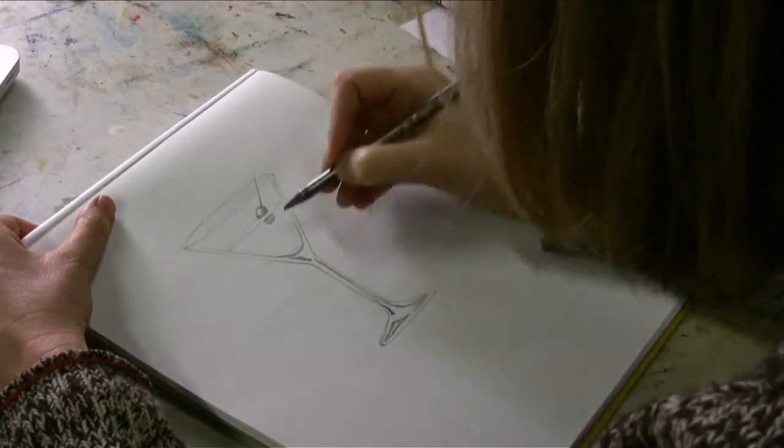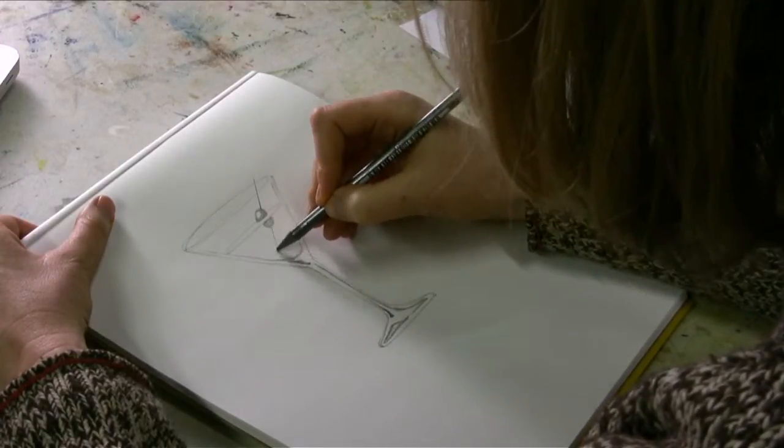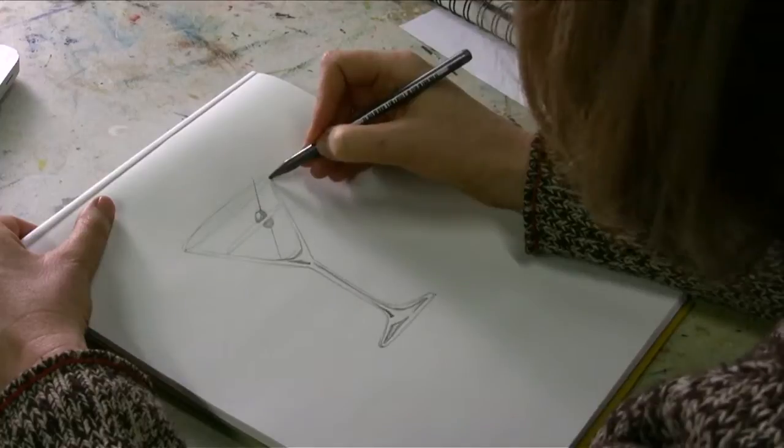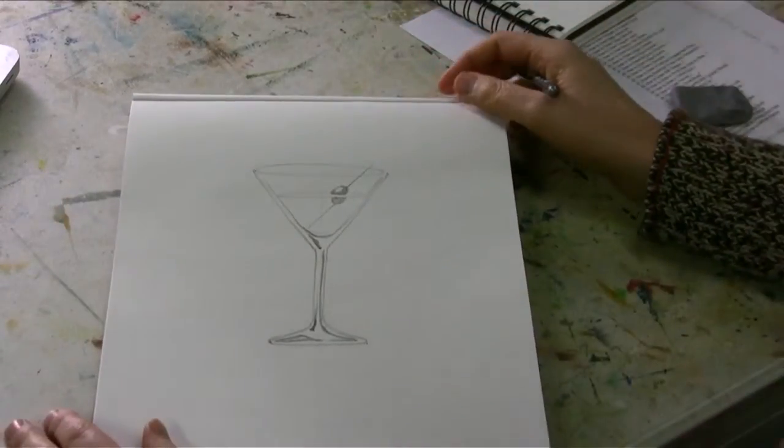We'll have the toothpick coming out and coming down. I'm not going to have it line up either, make it a little more interesting. And this is how we draw a cocktail glass.